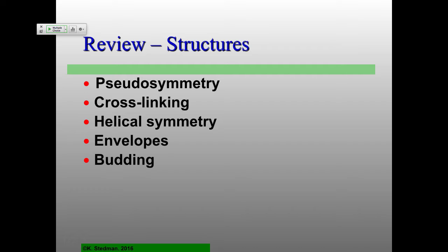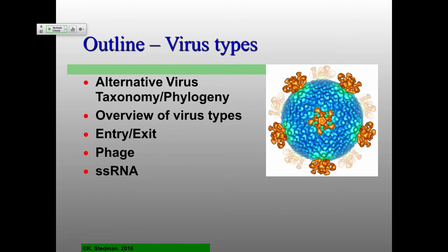Any questions on the structural stuff we talked about last time? I wanted today to really finish up a little bit with how taxonomy has become really confusing. I mentioned last time that it's not really very good — the ICTV, how you come up with species versus genera. I wanted to talk about ideas that have come out of the study of this virus I discovered, in terms of thinking about what people call really deep phylogeny or deep taxonomy — how basically all viruses are potentially related to each other, and that has to do with the actual structure of the capsid proteins and how they fit together.